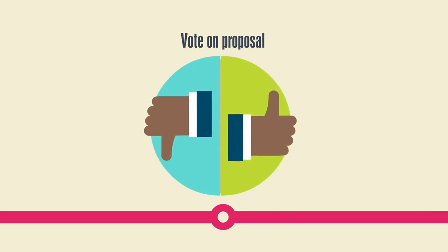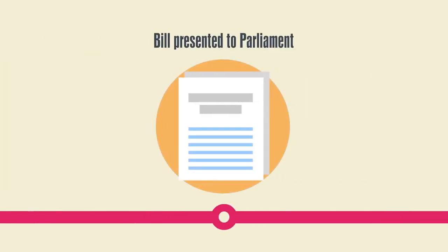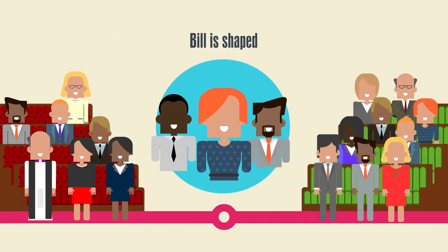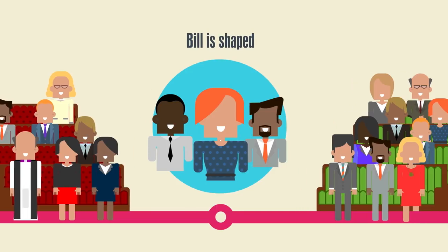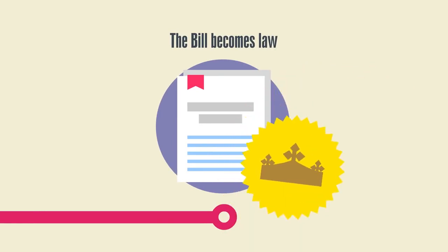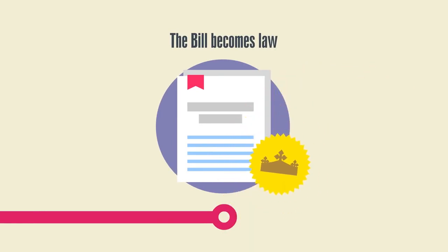Cabinet Ministers must agree whether the proposal is taken forward. Once agreed, a bill is drawn up, and the Minister responsible for the policy introduces the bill to Parliament for debate. MPs and members of the House of Lords comment on, debate, or amend the bill through several stages. At the end of the process, apart from very rare circumstances, it must be agreed by both houses. It's then passed to the monarch, who gives formal approval, or royal assent, and the bill becomes law, called an Act of Parliament.